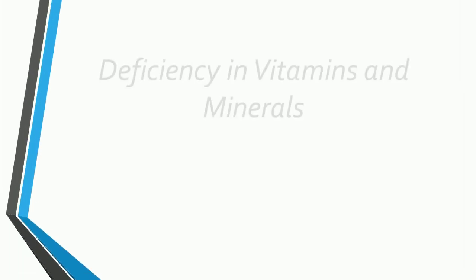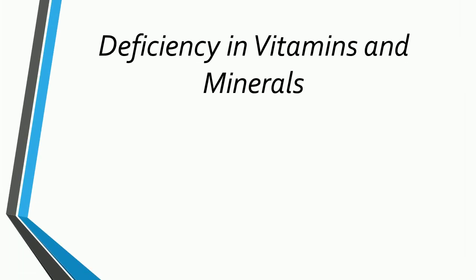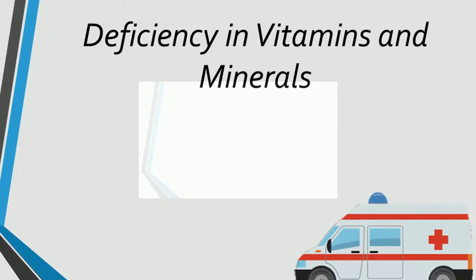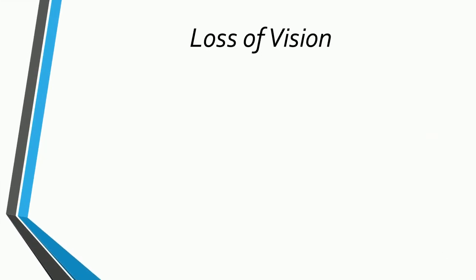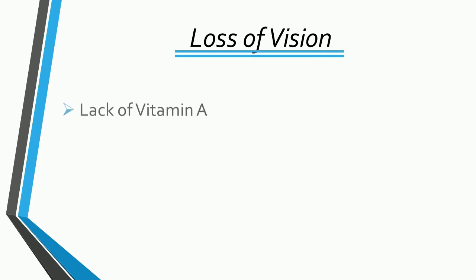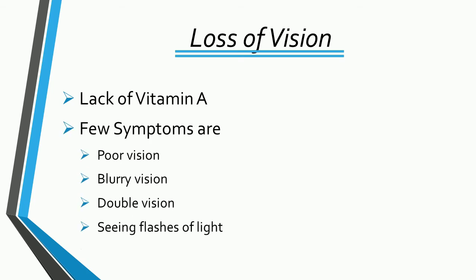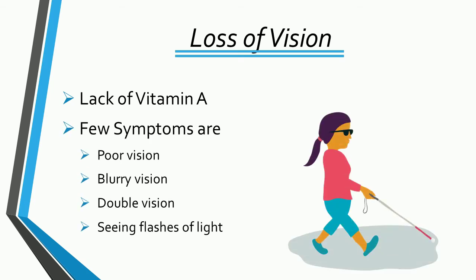Now let's see deficiency in vitamins and minerals. Loss of Vision is caused by the lack of vitamin A. Its few symptoms are poor vision, blurry vision, double vision, and seeing flashes of light.